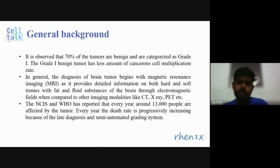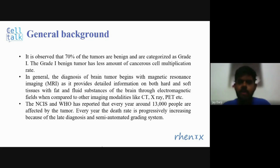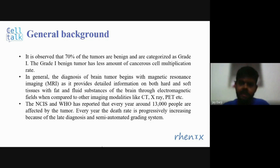You might be wondering how these tumors are identified. In general, the diagnosis of brain tumor begins with MRI — magnetic resonance imaging — as it provides detailed information on both hard and soft tissues with fat and fluid substances of the brain through electromagnetic fields. MRI gives better, more detailed images than other modalities like CT, X-ray, and PET.